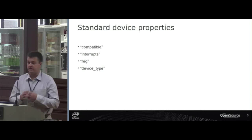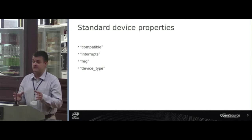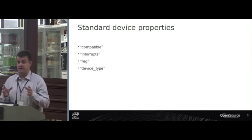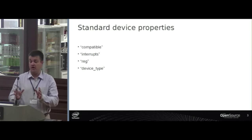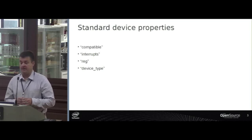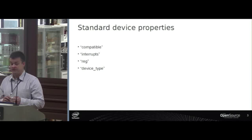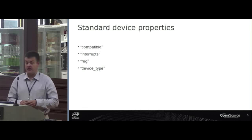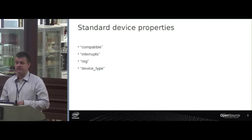It gives us a way to describe properties of the device. The fundamental property is 'compatible' — it tells you what it is, for example that it is a 16550 UART. There are other standard device properties that all devices might have, such as the interrupts, the register addresses, and a device type — which we mostly don't use in Linux — it's the class of device.